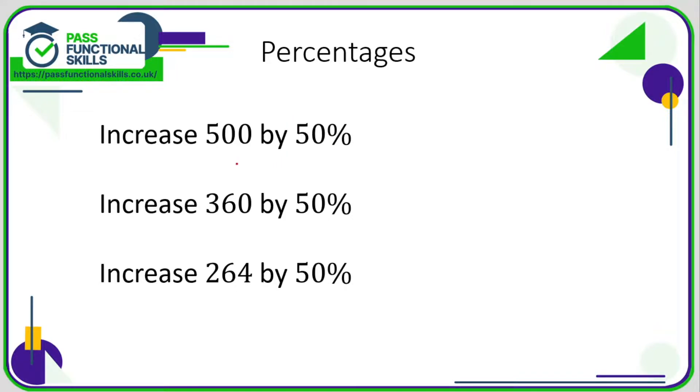So here we're increasing 500 by 50%. Well first of all, what is 50% of 500? 50% of 500 is 250. So now the question is as simple as increase 500 by 250. Add the two together: 750.